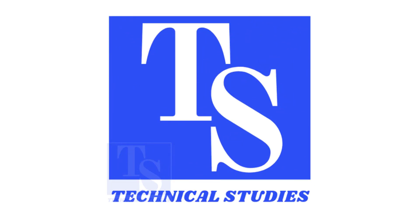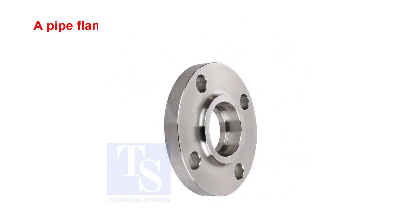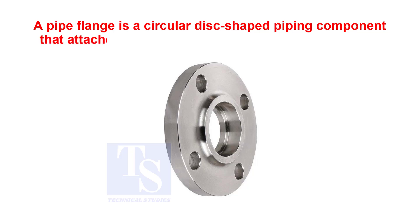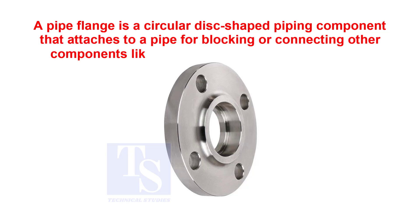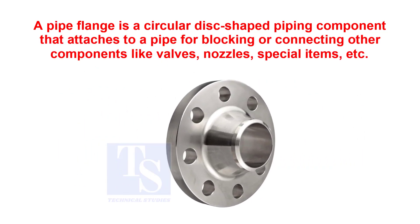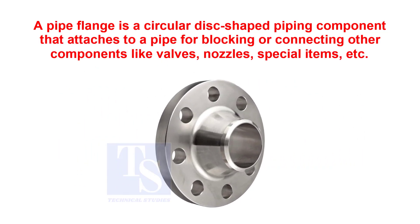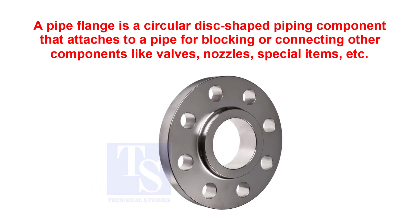Welcome to Technical Studies. In this video, we will learn how to classify the flanges. A pipe flange is a circular disc-shaped piping component that attaches to a pipe for blocking or connecting other components like valves, nozzles, special items, etc.